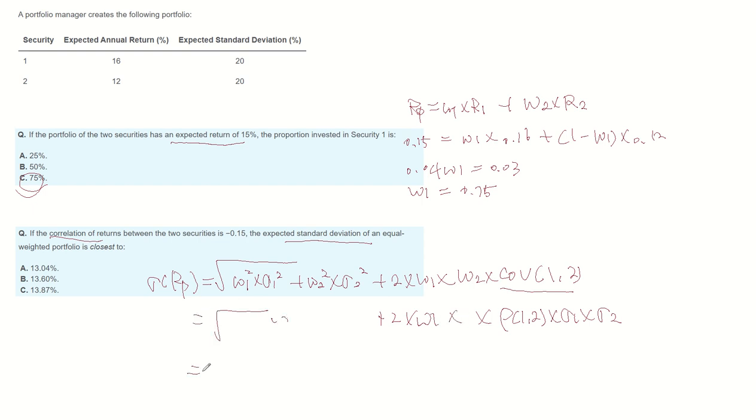So let's plug in the numbers. Weight is 0.5, sigma 1 is 20, weight 2 is 0.5, sigma 2 is 20, plus 2 times 0.5 times 0.5, correlation is minus 0.15, multiplied by 20 times 20.